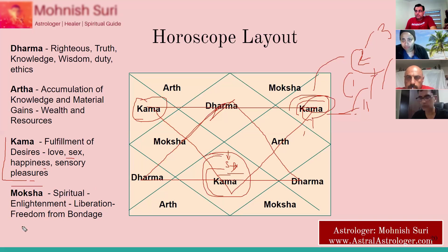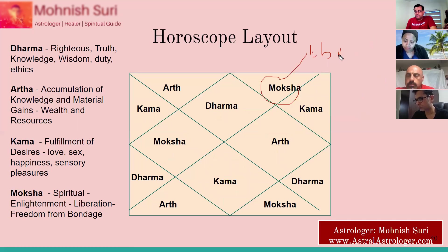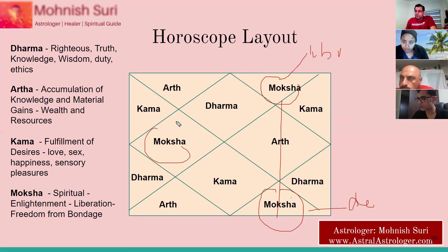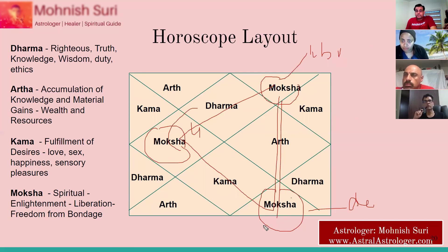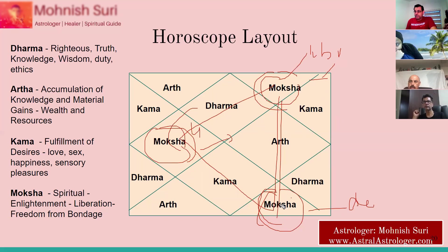Moksha is represented by the twelfth, eighth, and fourth houses. The twelfth house is liberation, freedom, and spiritual life. The eighth house is the house of death. The fourth house is your mother and homeland. Freedom from these three things is Moksha. Death is a freedom. The twelfth house is spiritual life and life after death. The fourth house represents departure of the soul, and the ninth from the eighth also shows the voyage.